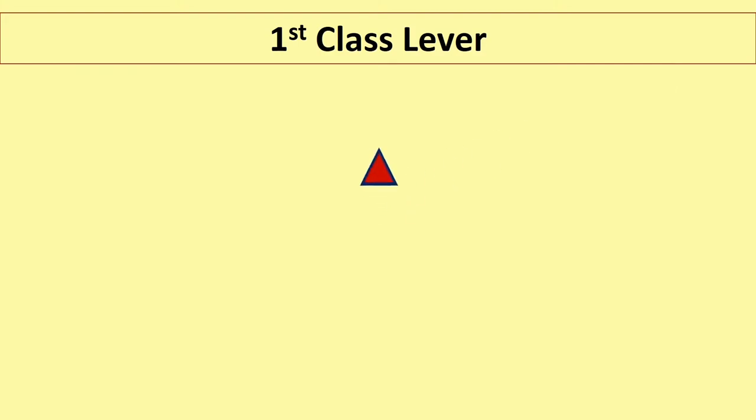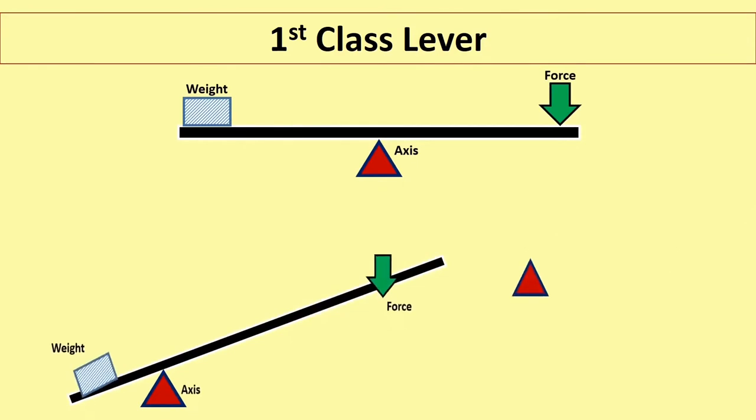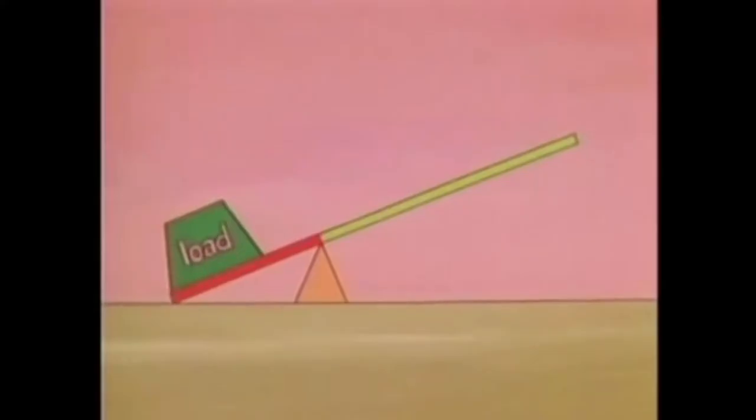In first class lever, axis is always at the middle. The weight and the force is placed at its two extreme ends. Hence, if the axis is altered towards the weight, then the force arm will be greater and hence force will be generated greater.